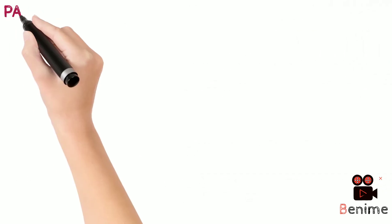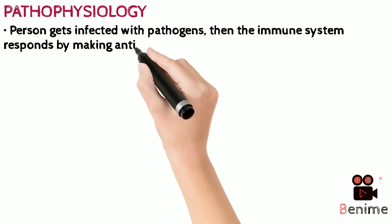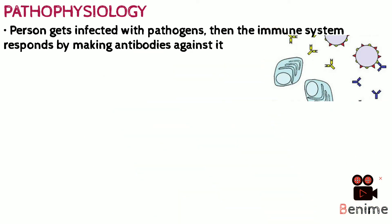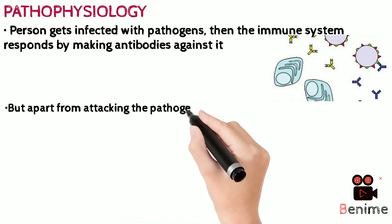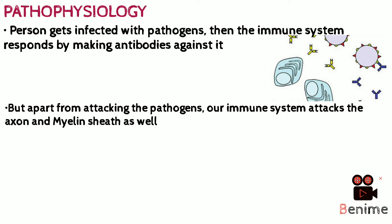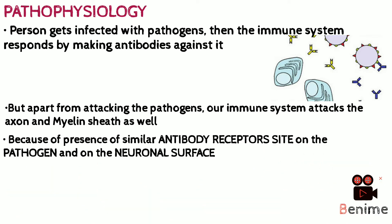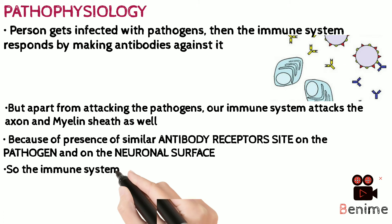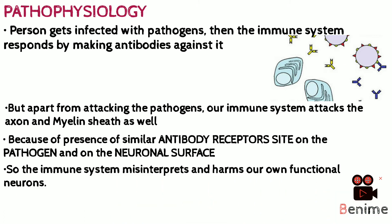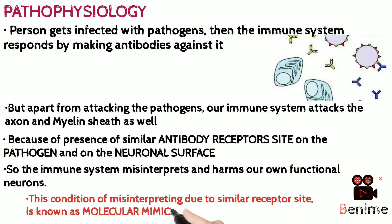Let's now look at the pathophysiology of GBS. When a person gets infected with pathogens, the immune system responds by making antibodies against it — quite the defense mechanism. But what's special in GBS is that our immune system attacks the axon and myelin sheath as well. This happens because of similar antibody receptors present on both the pathogens and neuronal surface. So the immune system harms our own neurons along with the pathogens, and this phenomenon of misinterpreting due to similar receptor sites is known as molecular mimicry.